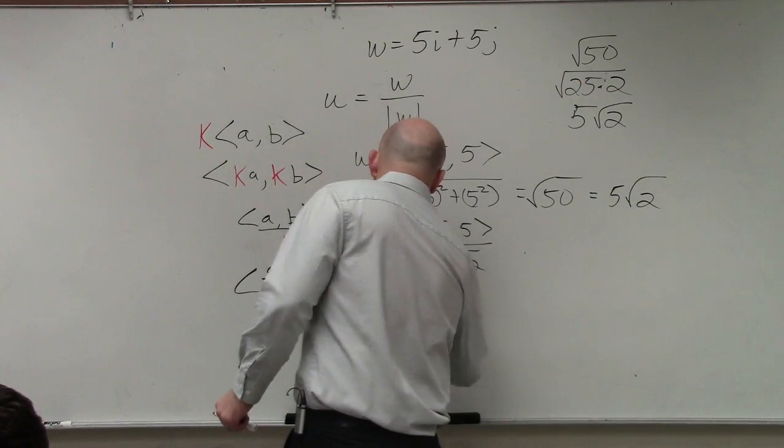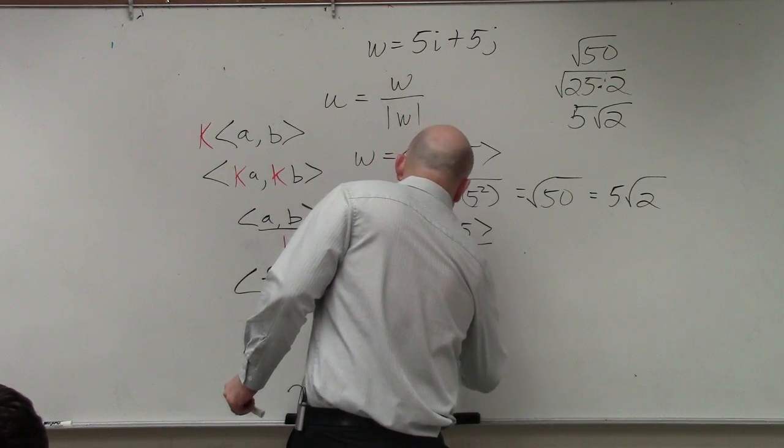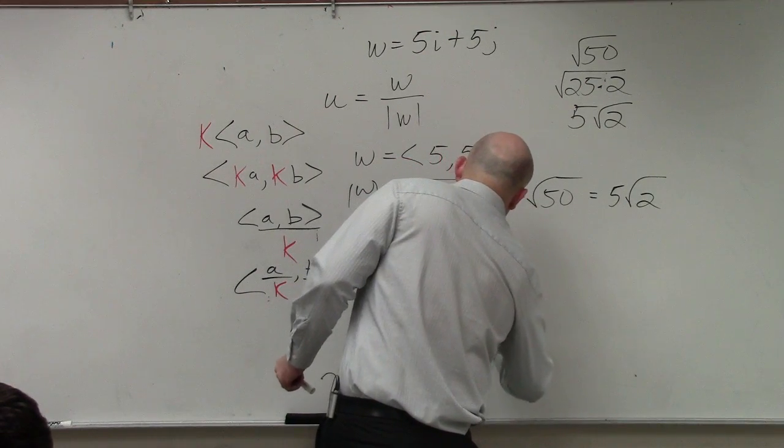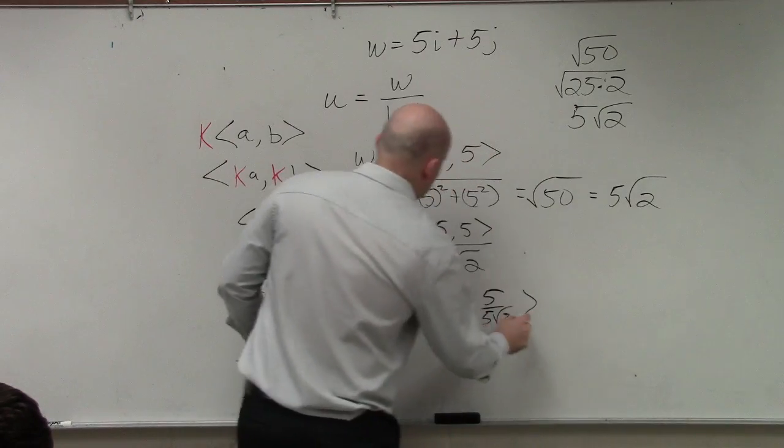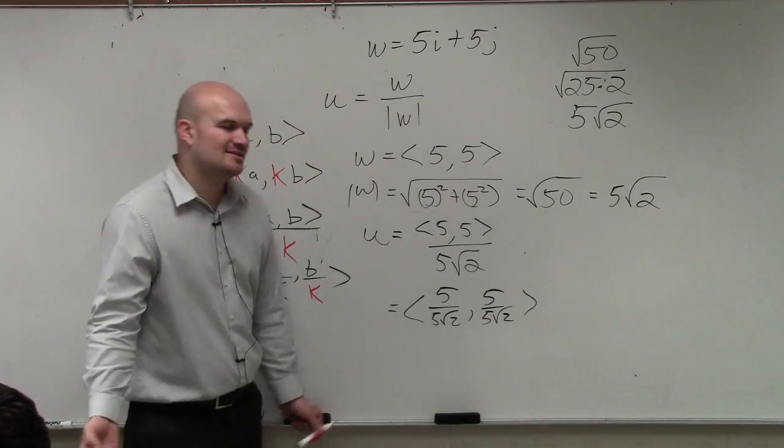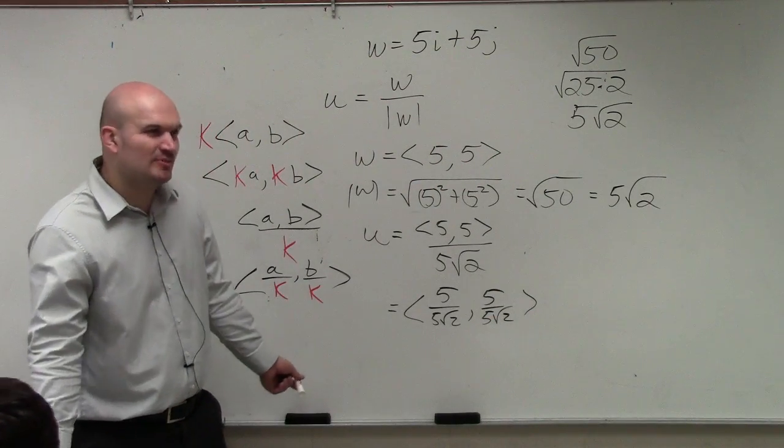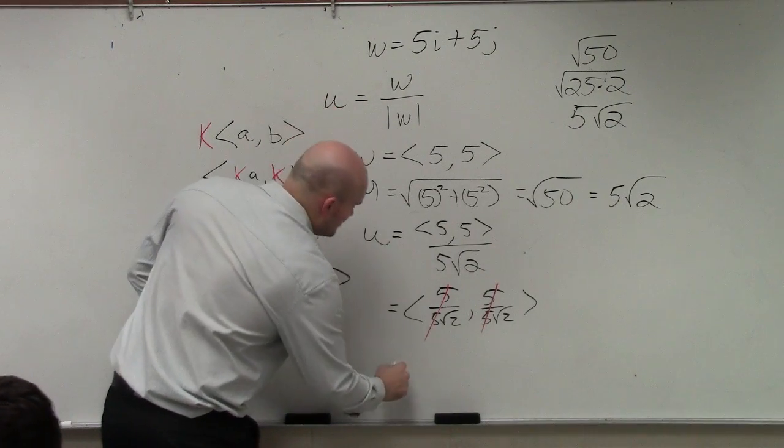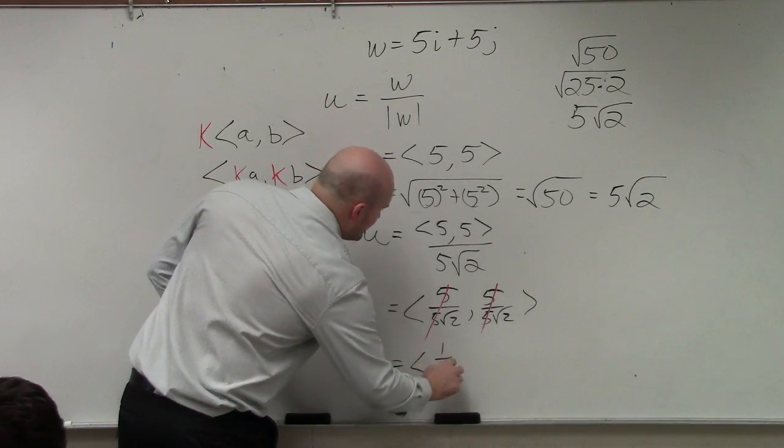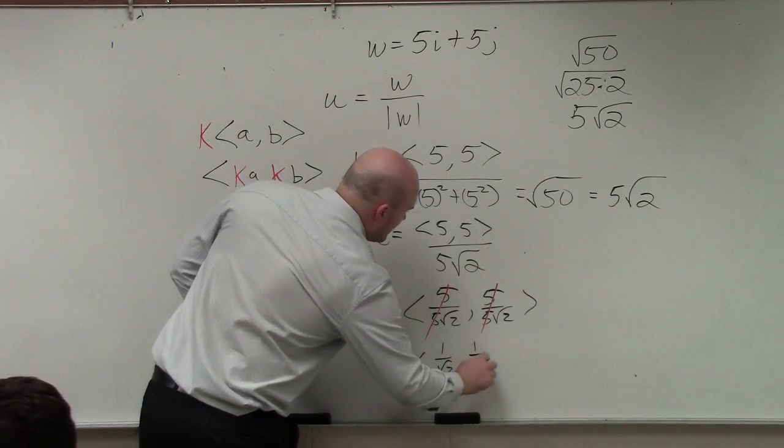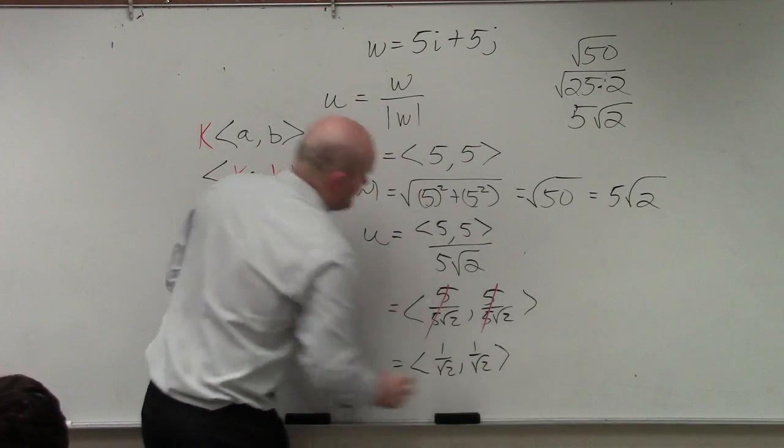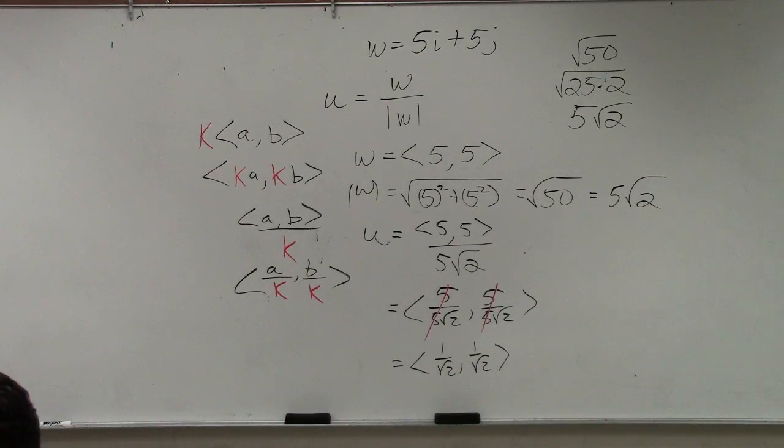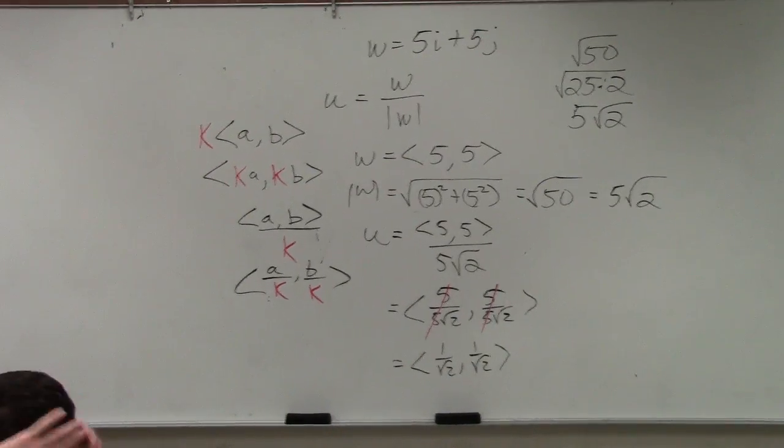So therefore, my unit vector is 5 over 5 square root of 2, comma, 5 over 5 square root of 2. We don't really rationalize the denominator. We don't—it's not really considered simplifying for unit vectors. But those fives divide to ones. So my unit vector is 1 over the square root of 2, comma, 1 over the square root of 2. Done. OK? Questions? Yeah.